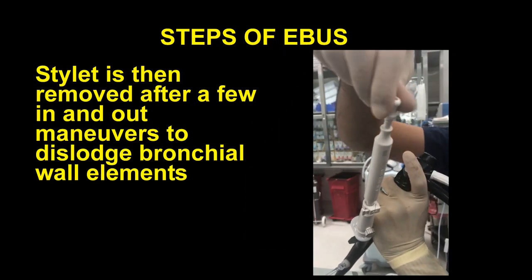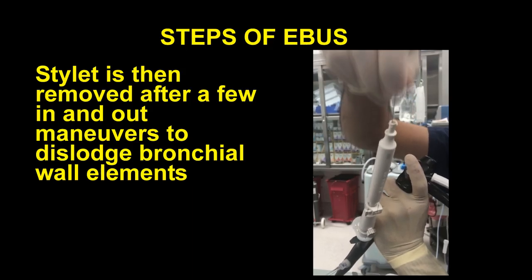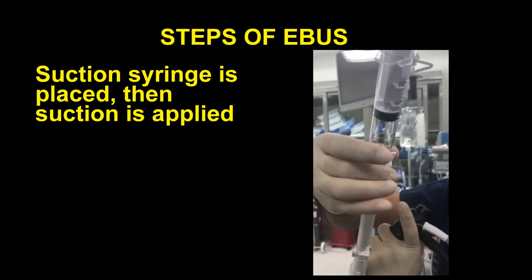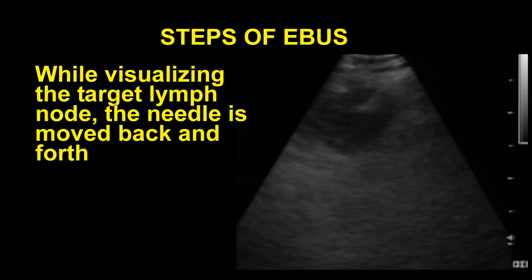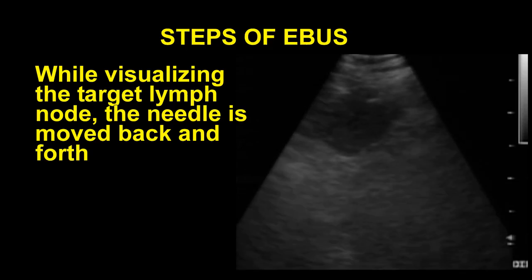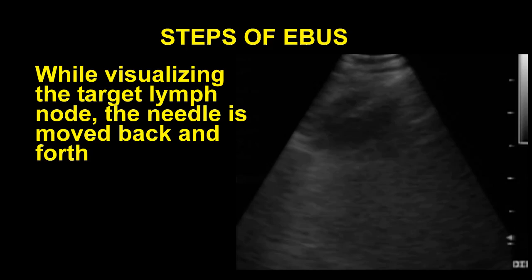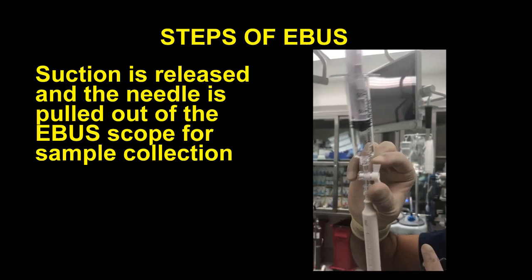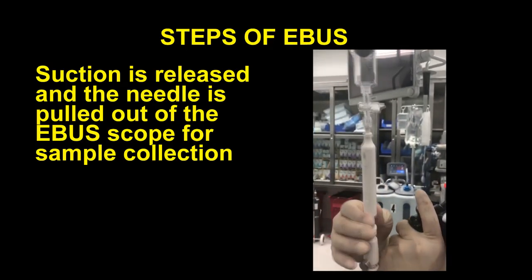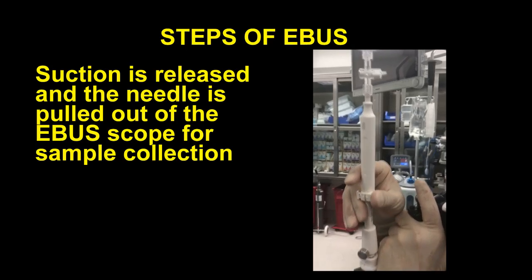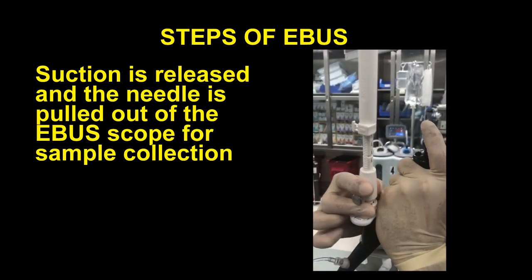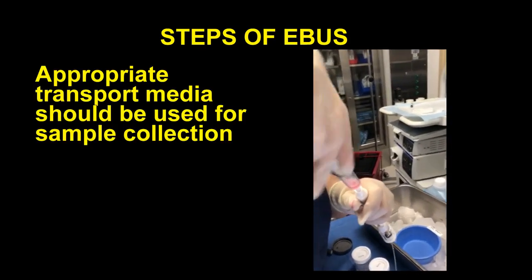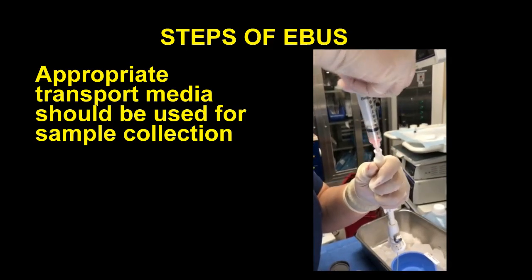The stylet is then removed after a few in-and-out maneuvers in order to dislodge bronchial wall elements. Suction is then applied using the vacuum lock syringe. While visualizing the target lymph node, the needle should be moved back and forth from the distal end of the lymph node capsule to the proximal end, about 10 to 15 times during each individual pass. The suction is then released and the needle is pulled out of the EBUS scope for sample collection. A minimum of three passes should be made at each targeted lymph node site to optimize diagnostic yield.